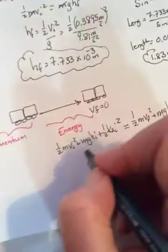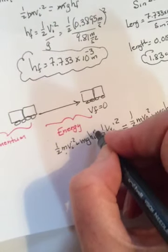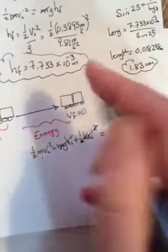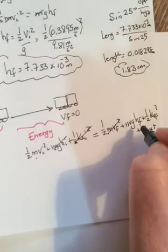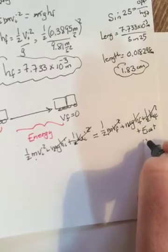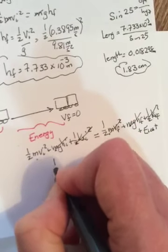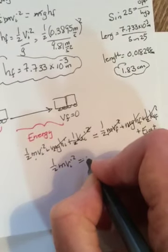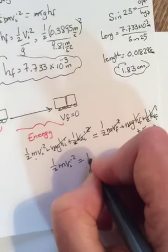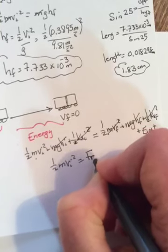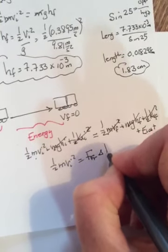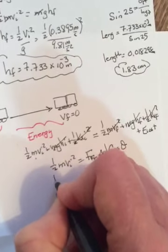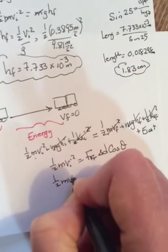All right, initially after the collision, yes they have a speed. It's a level road so there's no height, there's no spring. They're going to keep sliding until they eventually come to a stop - no speed, still no height, no spring, but there is an e lost. So one half mv initial squared equals e lost, which is the work done by friction. Work done is f, which is friction, delta d cos theta.